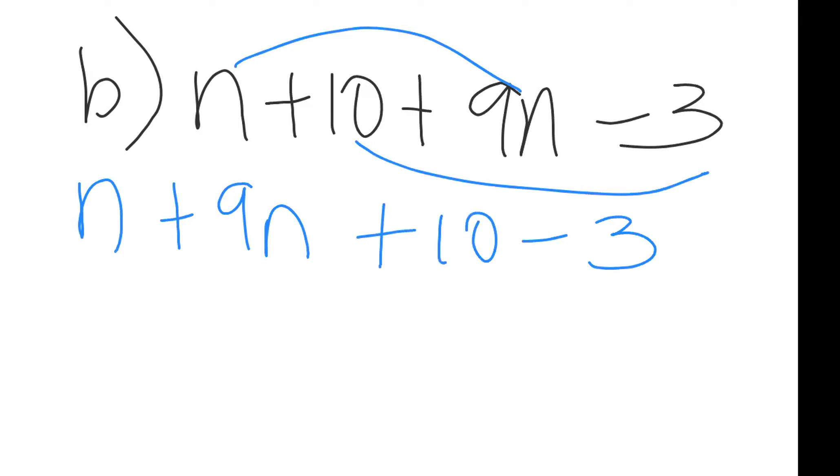n plus 9n, same signs add and keep. Remember that if you don't see a coefficient, the coefficient is one, so this is indeed 10n. Different signs subtract, answer takes a sign of the larger, that's positive 7. 10n plus 7.